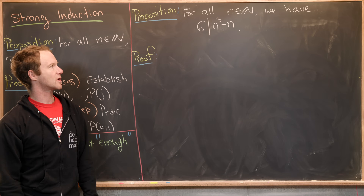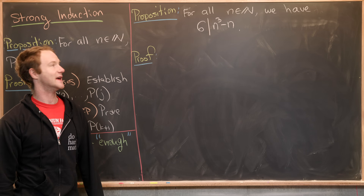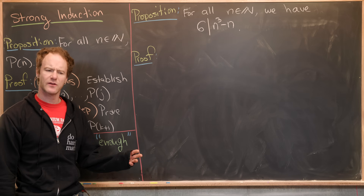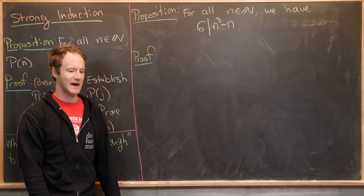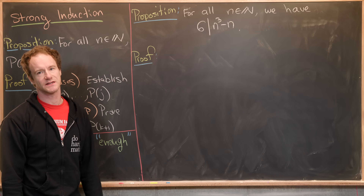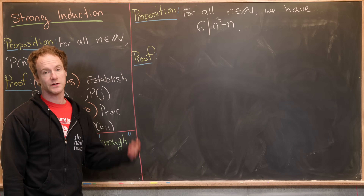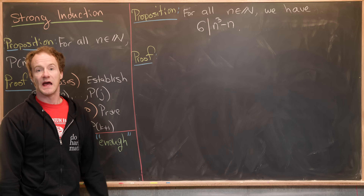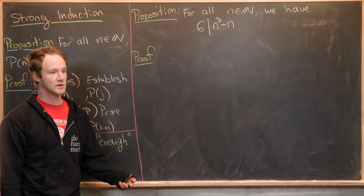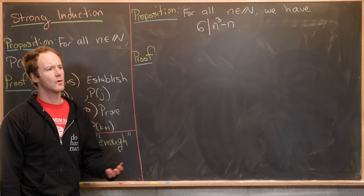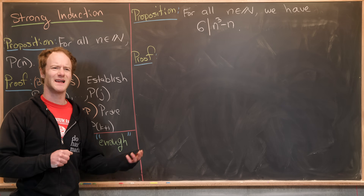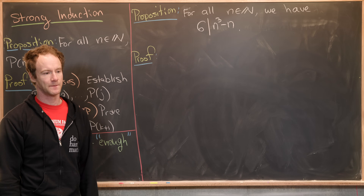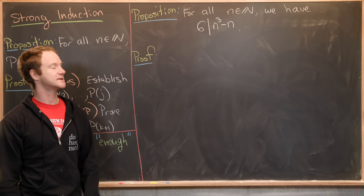For our next example, we'll show that for all natural numbers n, 6 divides n³ - n — in other words, n³ - n is a multiple of 6. Again, we're going to use strong induction, and here we'll use multiple base cases. We'll see that it's actually a sort of skipping induction using multiple base cases.